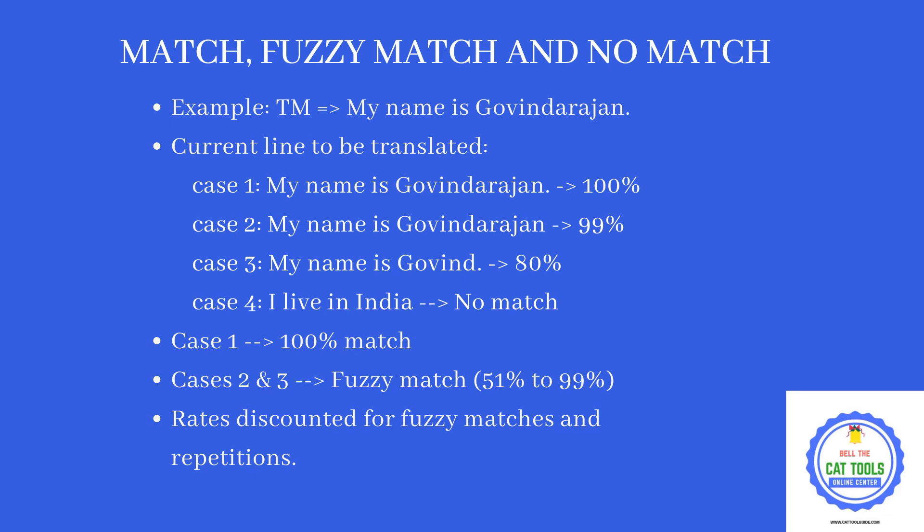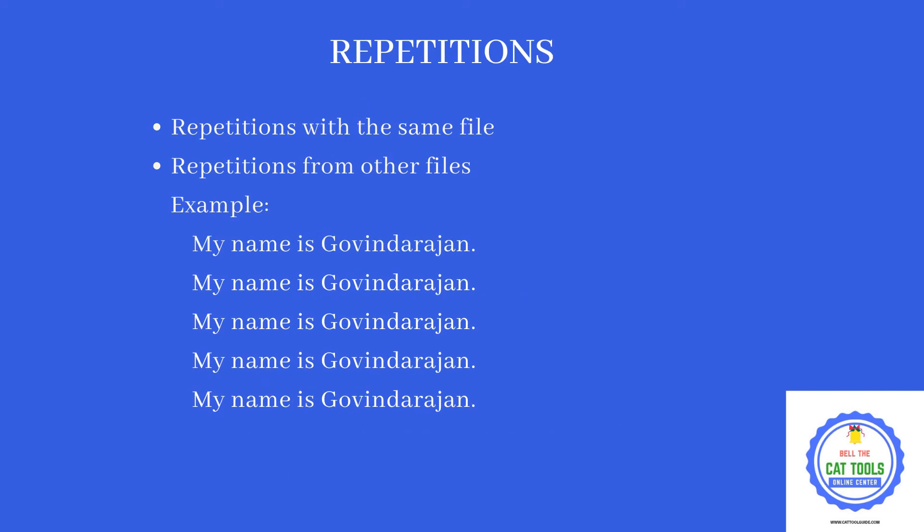Please note that some companies may discount you for repetitions and fuzzy matches — that is, the 99% and 80% match cases. A repetition is when a sentence repeats many times within the same file, or across a set of files in a project. For example, if 'My name is Govindarajan' repeats 5 times in the same file, that is considered a repetition.